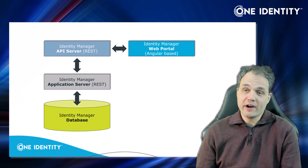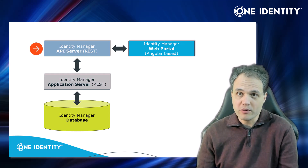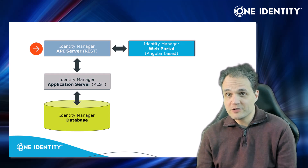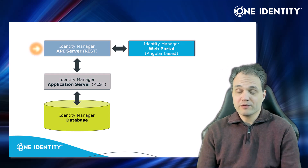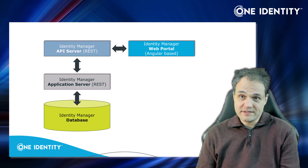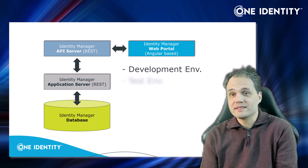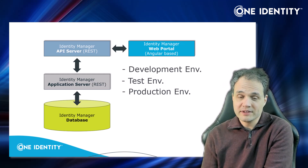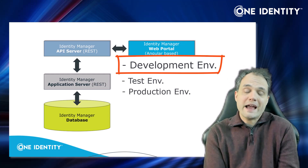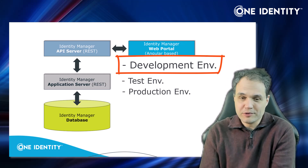If we take a look at what an environment looks like, the API server is one of the server components in an environment. By the way, it is separate from the application server, so please don't mistake one for the other. As with the rest of Identity Manager, there's always a development environment, a testing environment, and a production environment. Whatever you do, development work only ever happens in the development environment and never in the production environment.